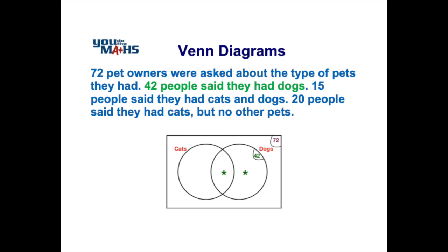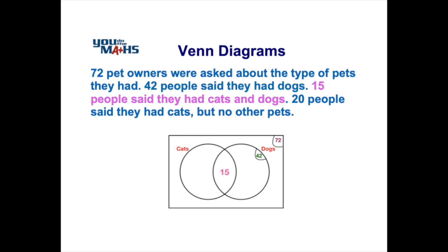The next piece of information says there are 15 people that own a cat and a dog. That number goes into the middle part where the two circles overlap, because those people owned both a cat and a dog. The next piece of information says there are 20 people that own a cat only, so that 20 goes inside the cat circle but away from the middle — because those 20 people do not own a dog, they only own a cat.